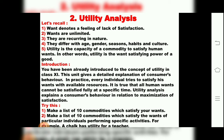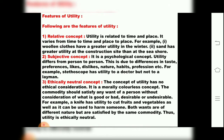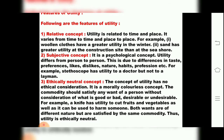There is an activity in your textbook: make a list of 10 commodities which satisfy your wants, and also list 10 commodities which satisfy the wants of particular individuals performing specific activities. For example, chalk has utility for a teacher — a teacher requires chalk for teaching on the board in the classroom, so chalk is a need and a demand for the teacher.